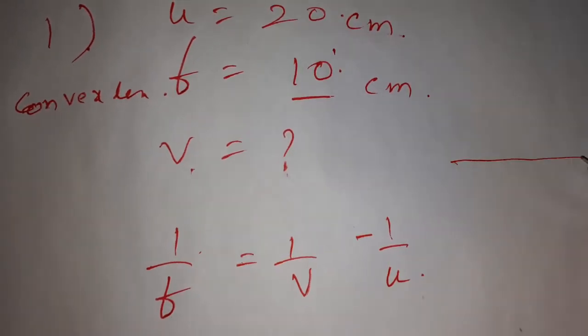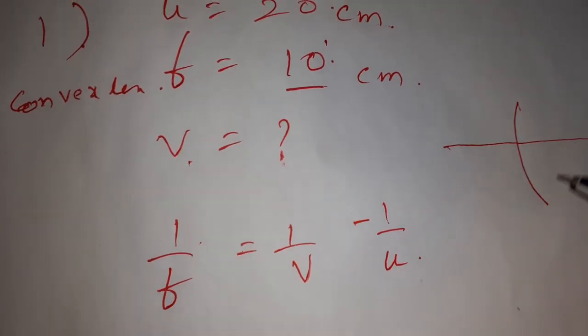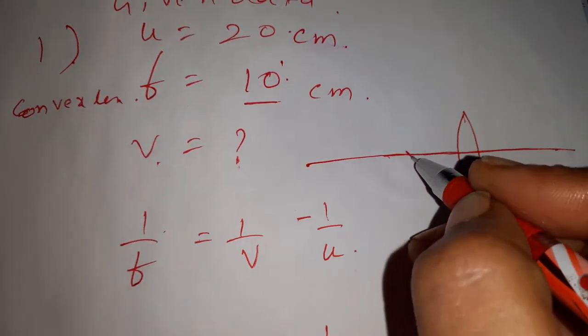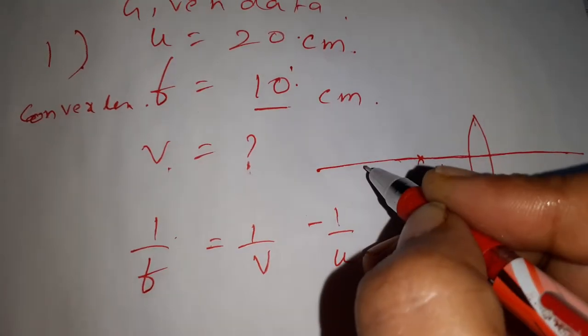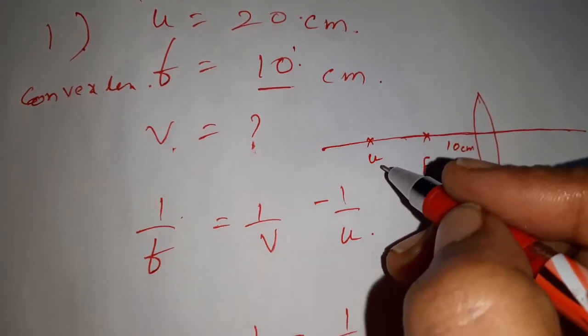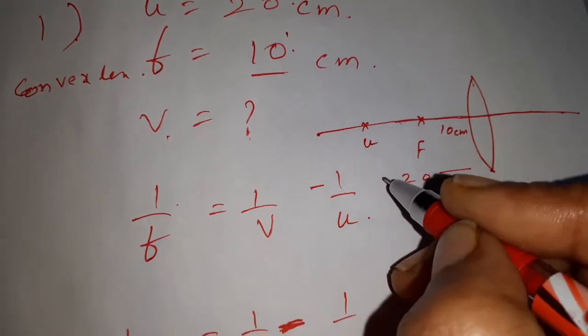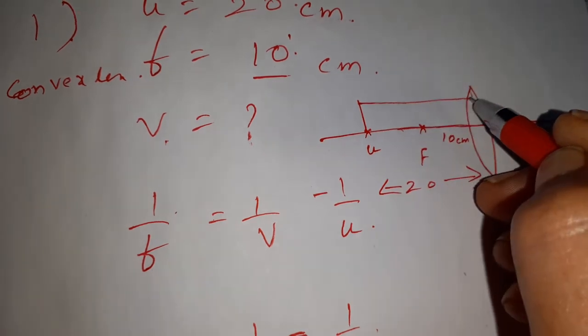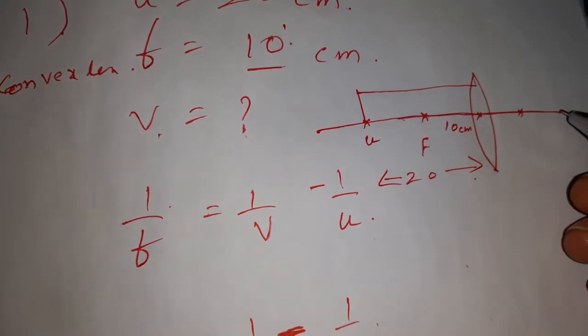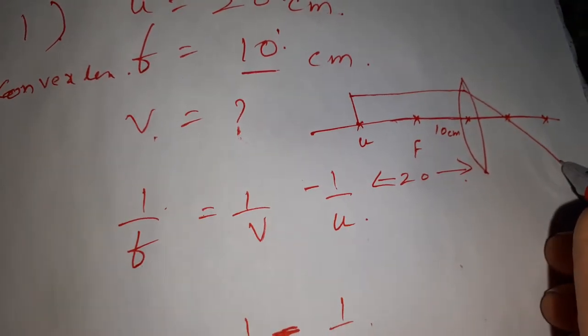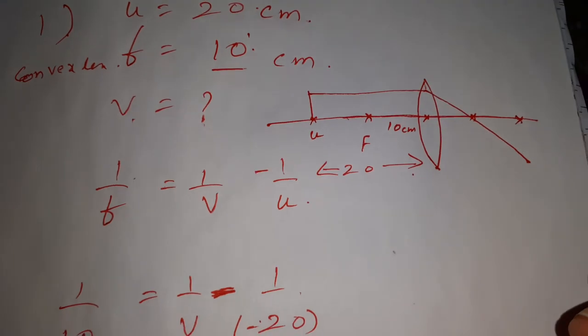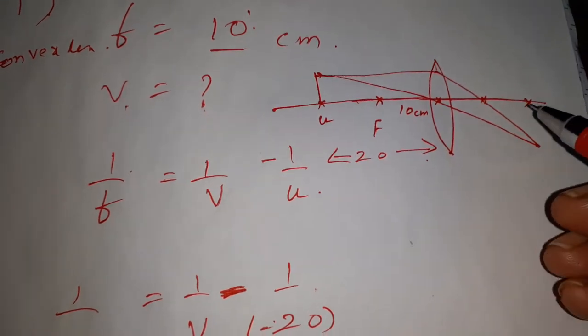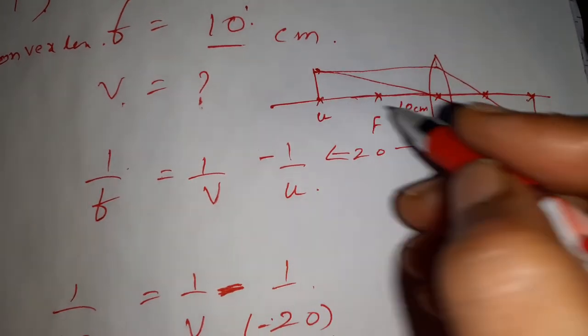So to know the nature of the image, as usual we have to draw the principal axis. Then draw a lens at the center. F and 2F. F is at 10 cm and object placed at 20 cm. As usual, draw the parallel line which should pass through focal, stop exactly near the 2F. Then the line which is passing through the center of curvature won't get deviated. The image is formed at 2F of the next side.